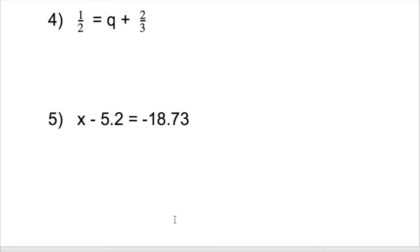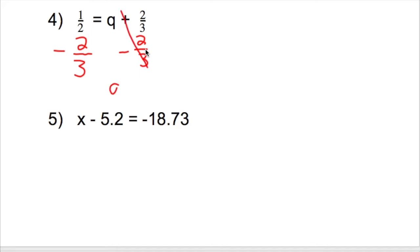Now we're dealing with fractions — that's okay. 1 half is equal to q plus 2 thirds. We want to get the variable q by itself. What's happening on the side with q? We're adding 2 thirds. The opposite of adding 2 thirds is subtracting 2 thirds, and whatever we do on one side, we have to do on the other side. Positive 2 thirds minus 2 thirds cancels out, leaving q on the right side. On the left side, we have 1 half minus 2 thirds.